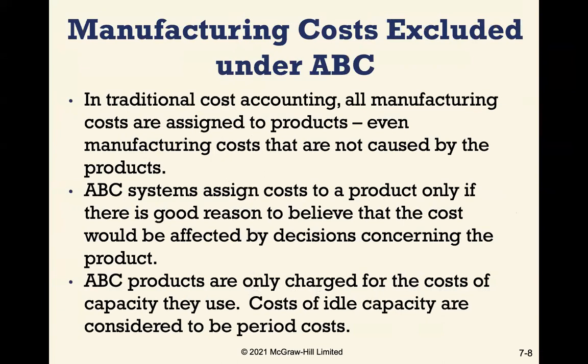Under traditional cost accounting, all manufacturing costs are assigned to products, even costs not caused by those products. Under activity-based costing, we only assign costs to a product if there's good reason to believe the cost will be affected by decisions concerning that product. In ABC, products are only charged for the costs of capacity they use, and costs of idle capacity are treated as period costs rather than product costs.